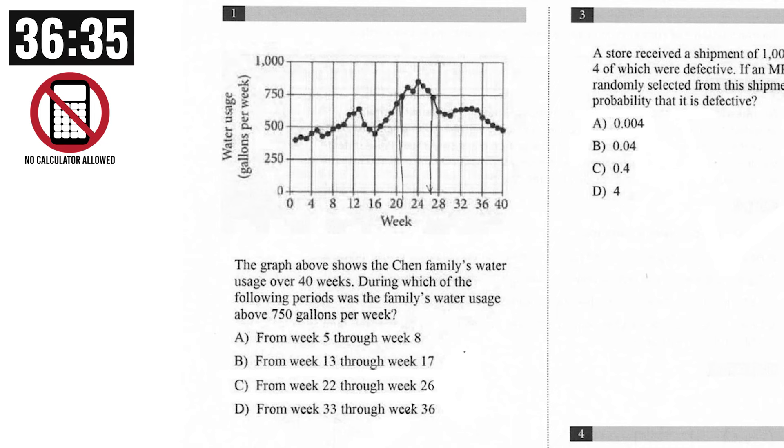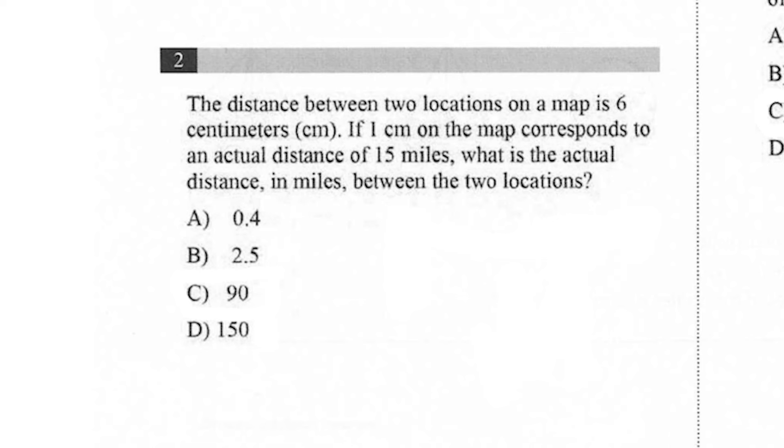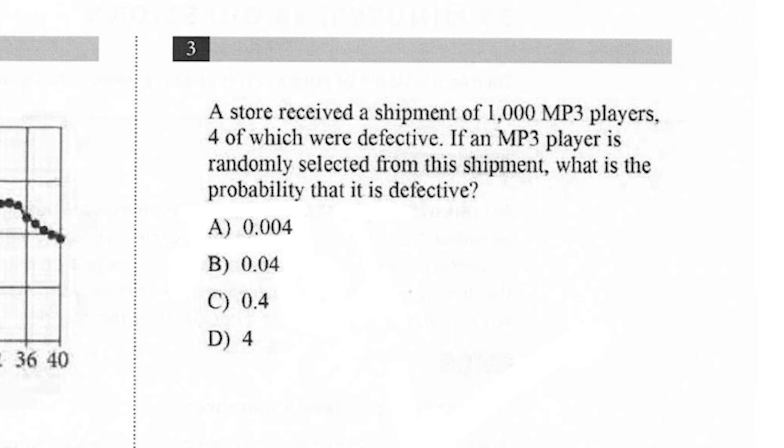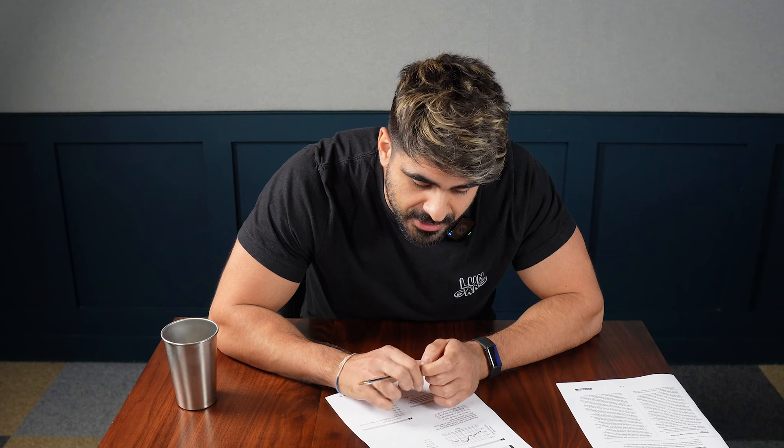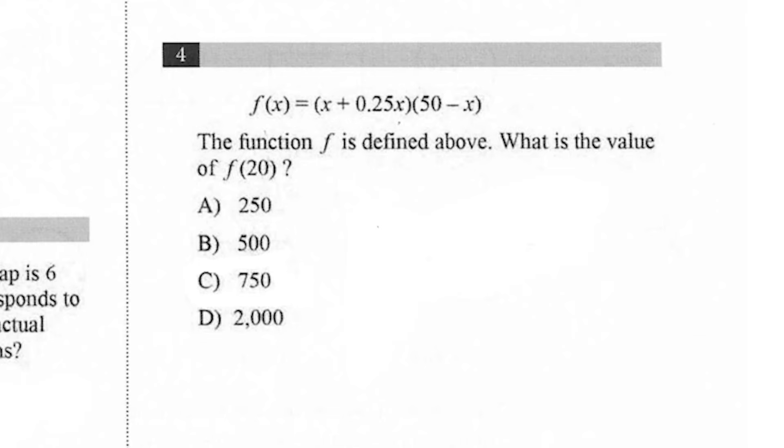Alright, this is the calculator bit. So the graph above shows the Chen or Shen family's water usage over 40 weeks. The distance between two locations on the map is six centimeters. Why aren't they doing feet, man? If one centimeter on the map corresponds to 15 miles, what is the actual distance in miles between the two locations? So six, you're just doubling it and tripling it. Ninety. A store received a shipment of 1,000 MP3 players, four of which were defective. If an MP3 player is selected, what is the probability that it's defective? So just four out of 1,000, 0.004.